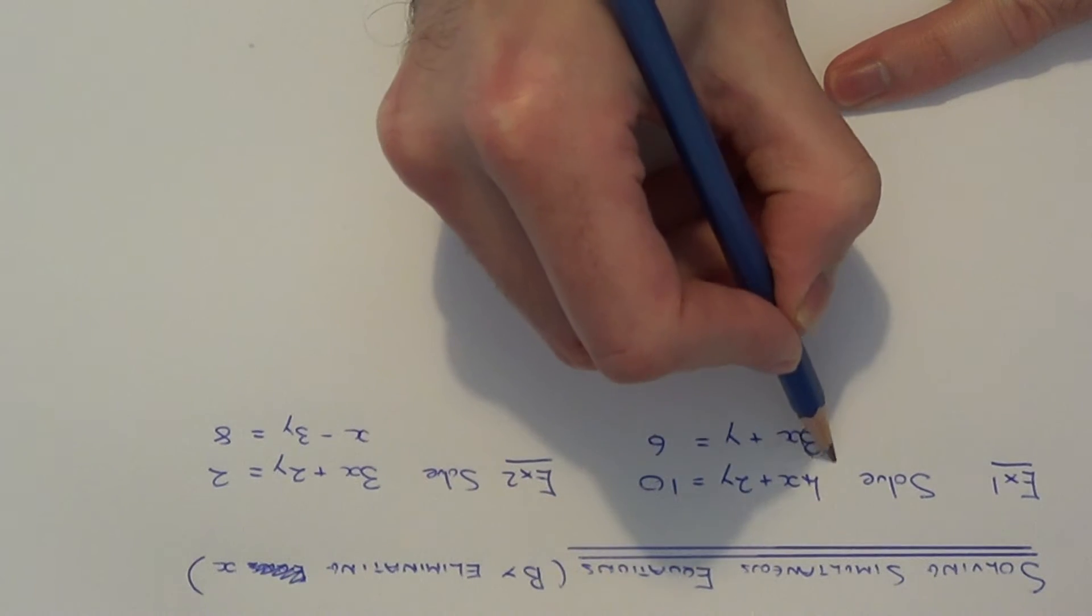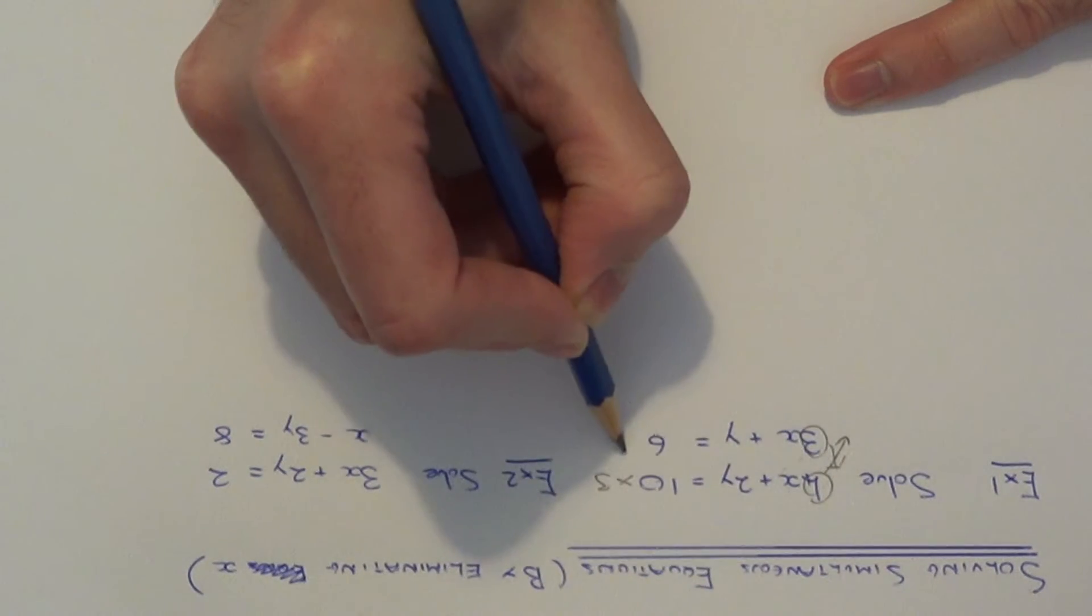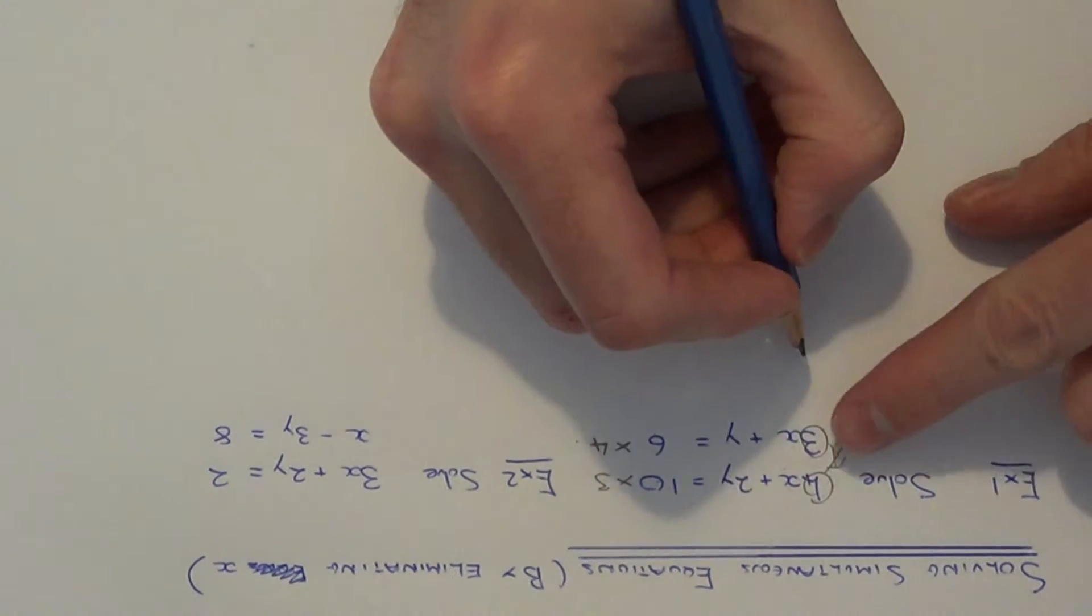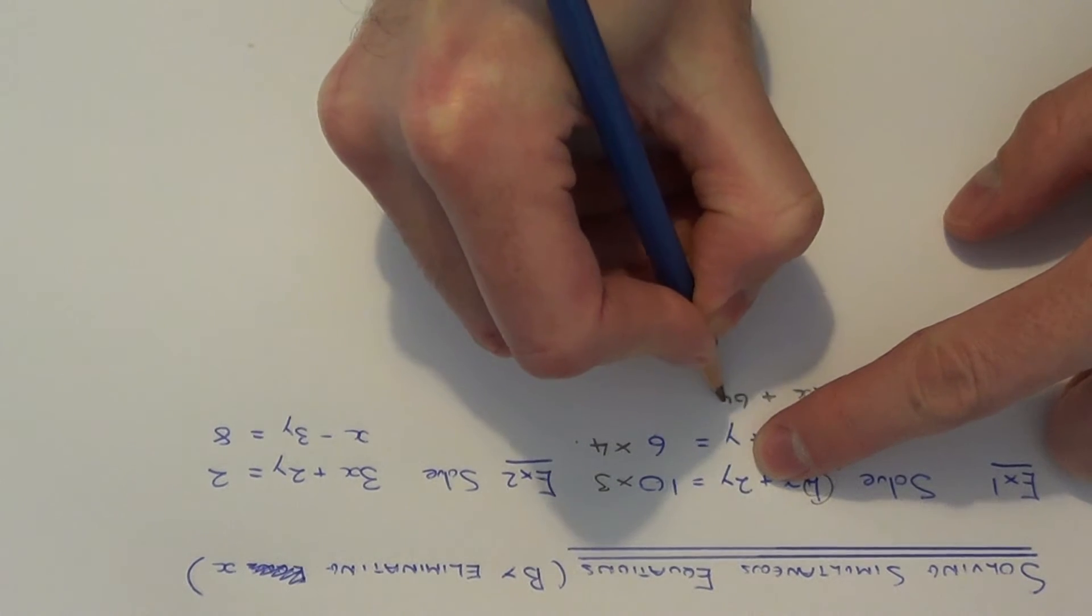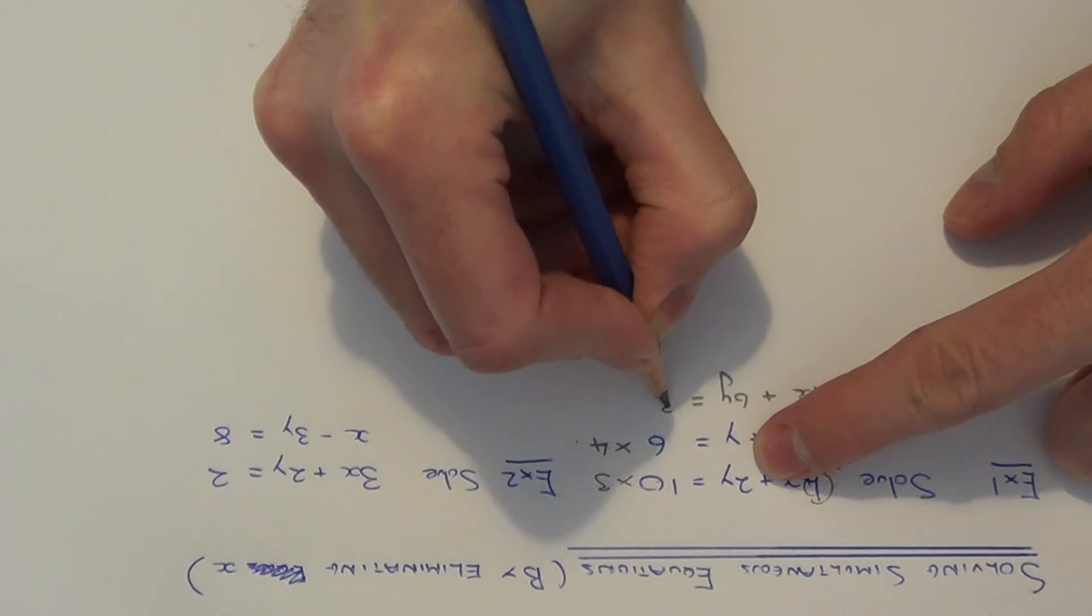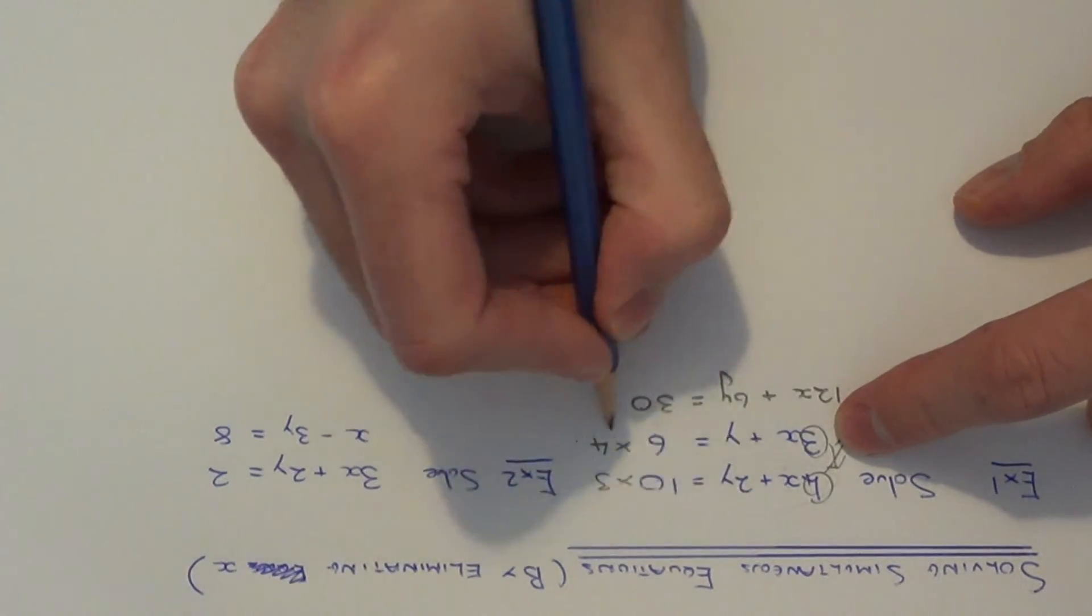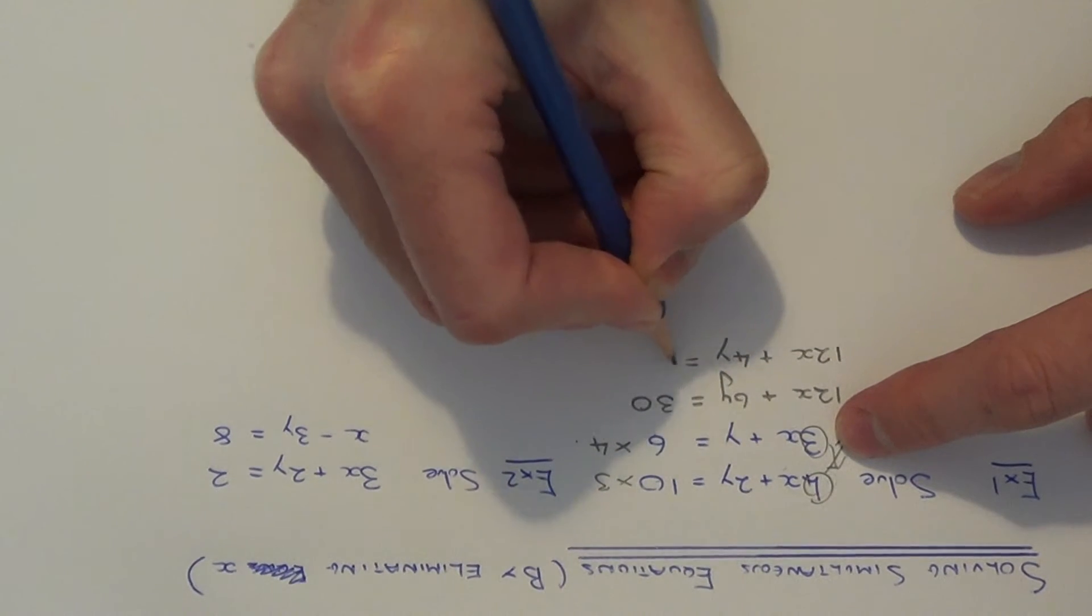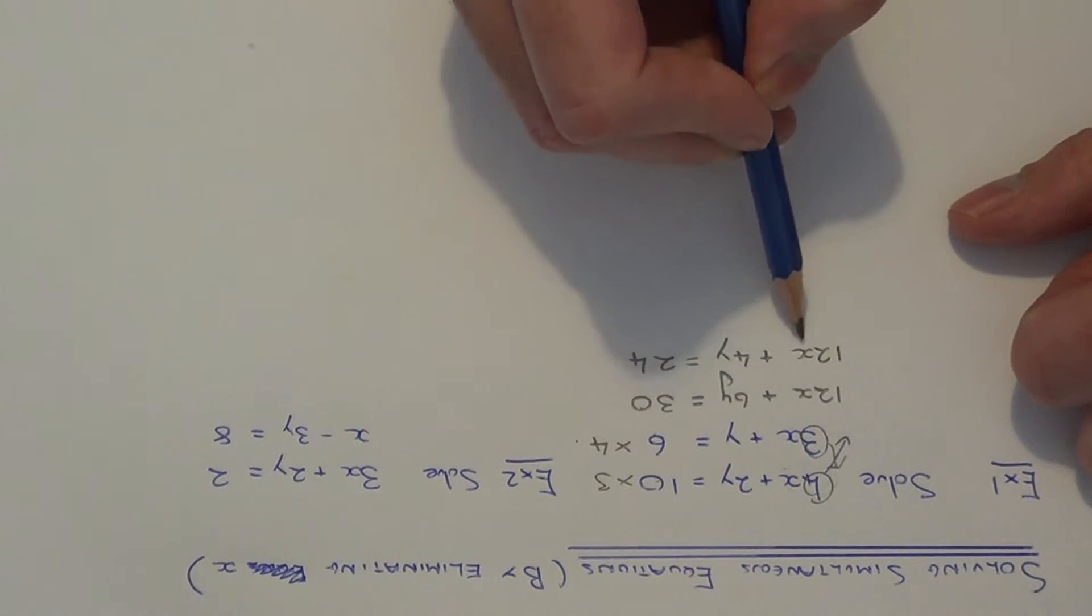The quick trick is to multiply the first equation by 3 and the second equation by 4. So if you multiply the first equation by 3, you get 12x plus 6y equals 30. And if you multiply the second equation by 4, you get 12x plus 4y equals 24. So as you can see, our two new equations both have the number before x the same.